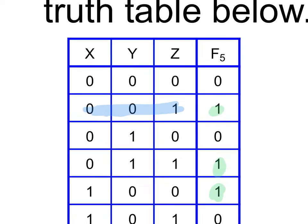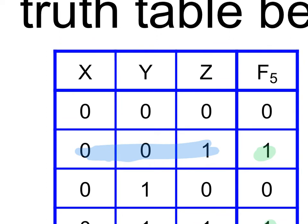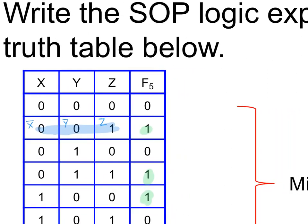The min term is determined by those zeros and ones next to the output one. So for example, zooming in: this is a zero and this is the X value — so this would be NOT X. This one would be NOT Y. But notice the last one is a one, so this would be Z. So essentially the scenario is NOT X AND NOT Y AND Z — that is when this circuit will output a one: when X is off, Y is off, and Z is on. That's one scenario where this circuit will be on.